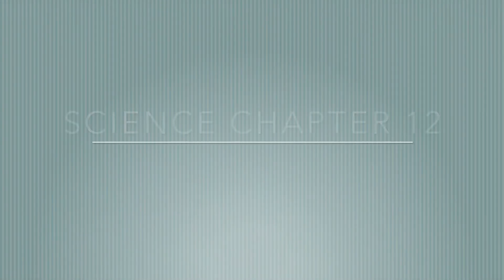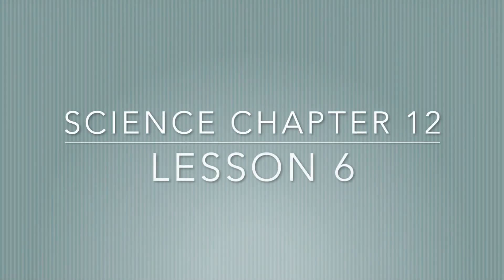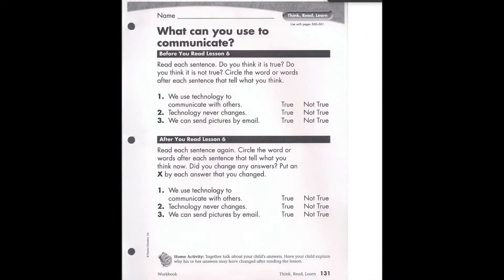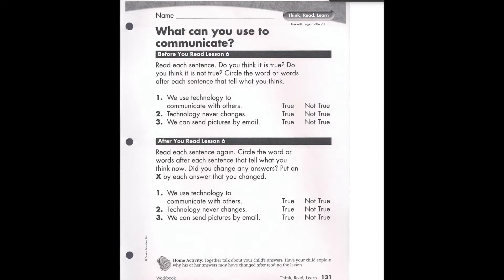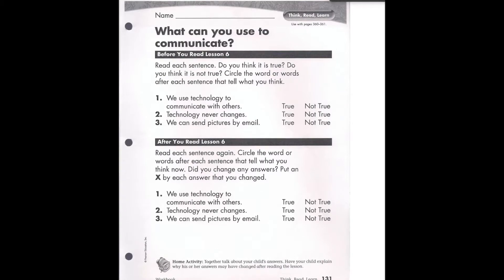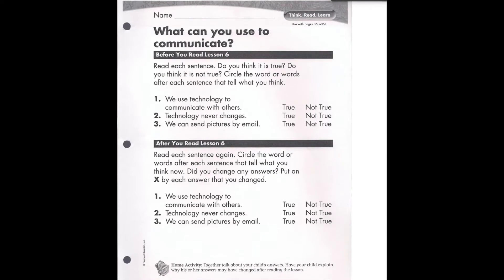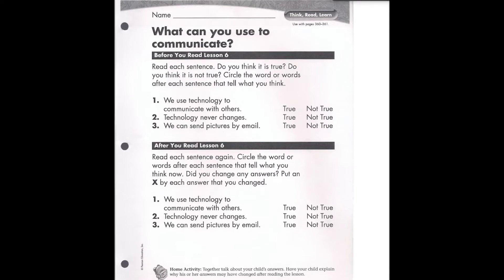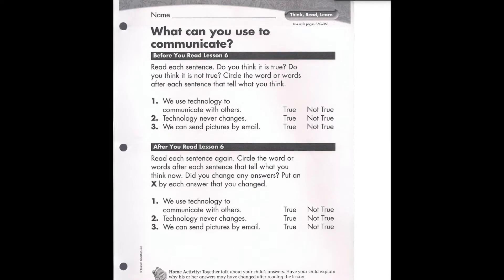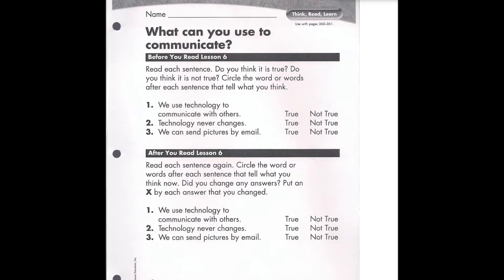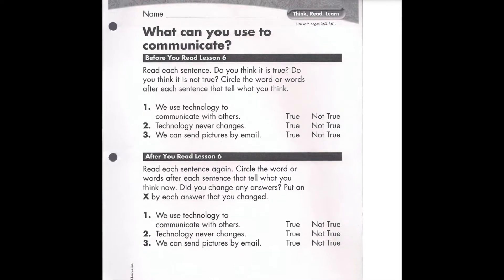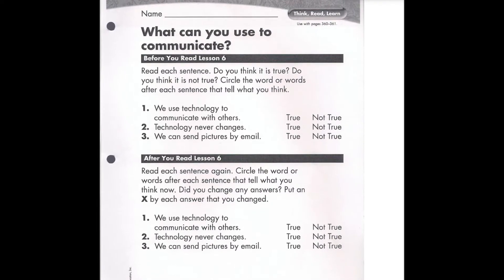Hey grade 1, welcome to science. Today we're going to be doing chapter 12, lesson 6. This is the last lesson in this section. Remember to pause me if you need to. If you don't have the sheet, just write the numbers 1, 2, and 3. You do not have to write the sentences, just write the answer — whether you think it's true or not true. If you have the sheet, just do it as we normally do.